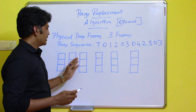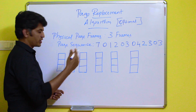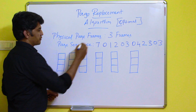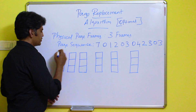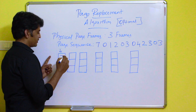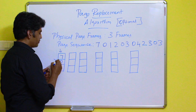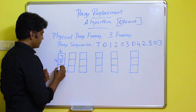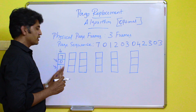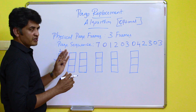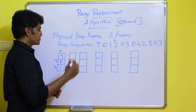We will start with the example. Process execution always starts with a page fault because initially all frames are free and no page information is available. So page 7 is entered in the first frame, page 0 during the second page fault, and page 1 with the third page fault. This is how the first three frames are filled with the first three pages.